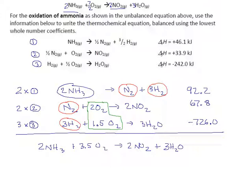And the big finish, what's our delta H? We must add all these up. 92.2 plus 67.8. You can say plus negative, or I'm just going to subtract 726. It comes out the same way. Minus 566 kilojoules. So that's our delta H.